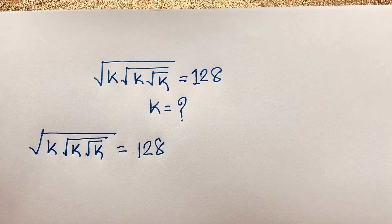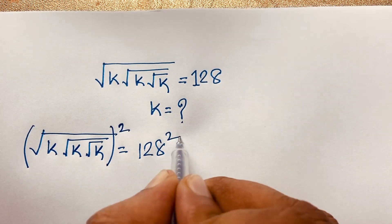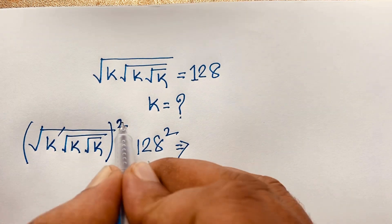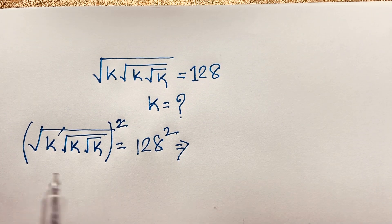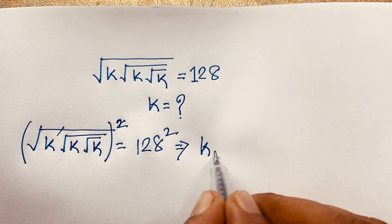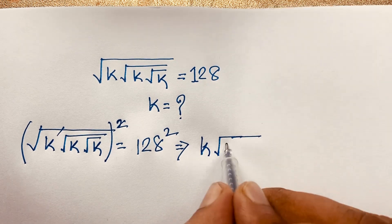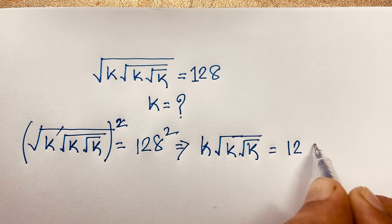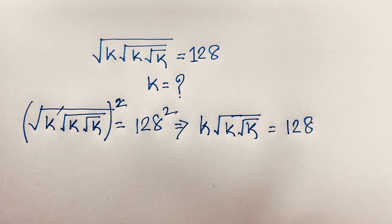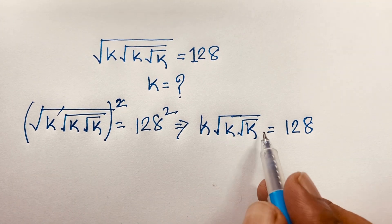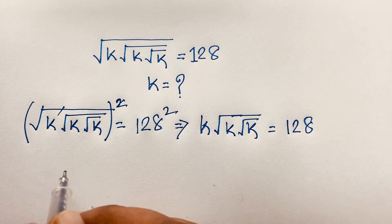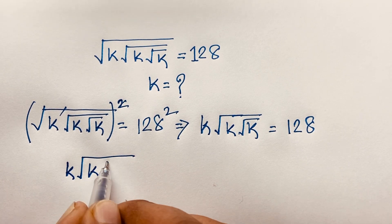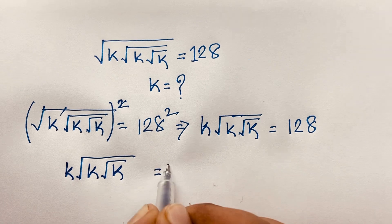Now I use both sides whole square. You can see that the outer square root is cancelled, so it will be k times square root k times square root k is equal to 128 squared. We take this value again here: k and 128 squared.